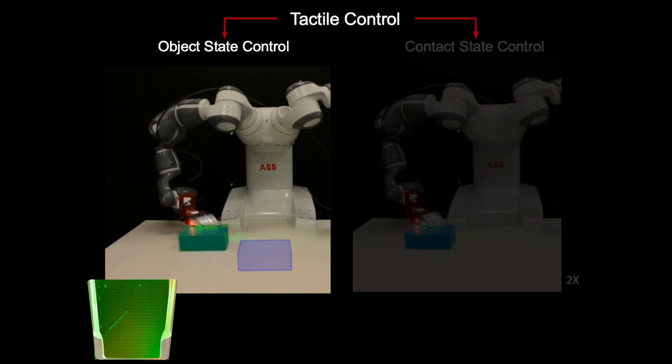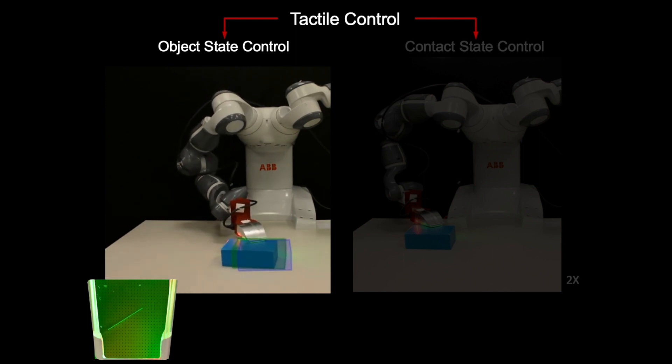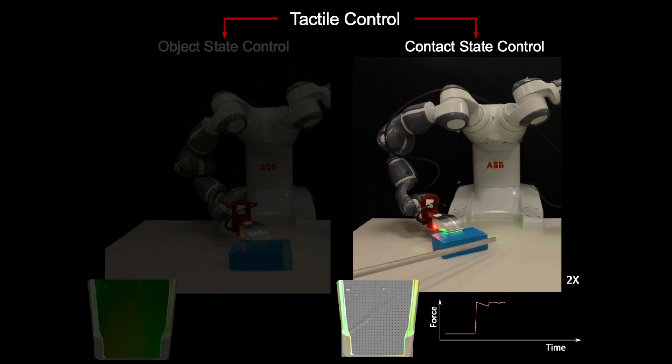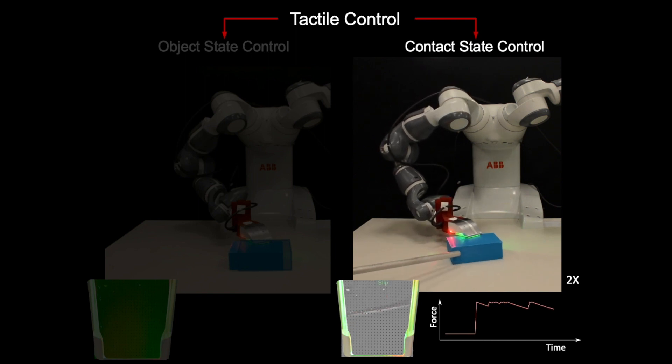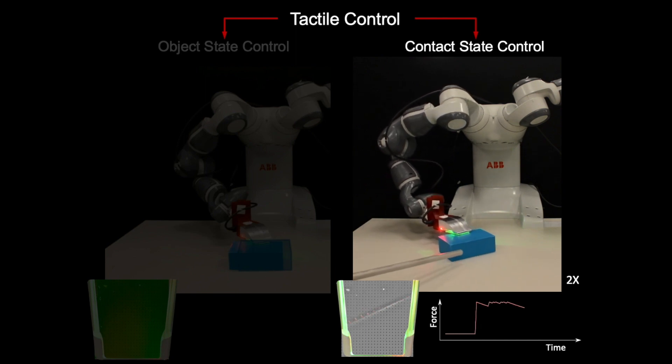We track the object pose from the geometric features detected in tactile sensors, and re-plan robot object trajectories in real-time to bring the object estimate to the goal in the presence of disturbances. We also monitor slippage between the object and the end effector to regulate the applied forces on the object and enforce a desired contact state.